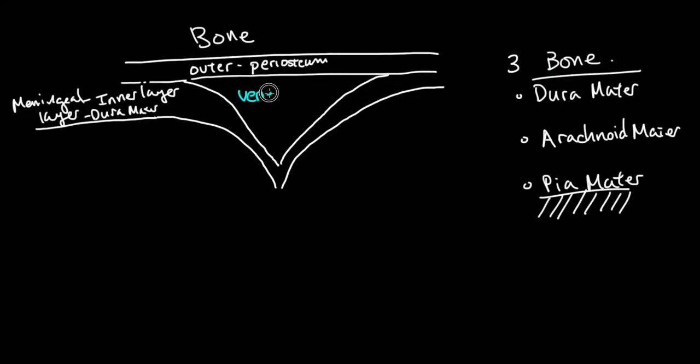a venous sinus. So venous blood can actually fill up in this area and then drain back into the circulation.